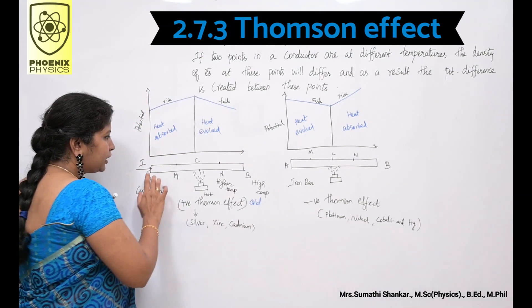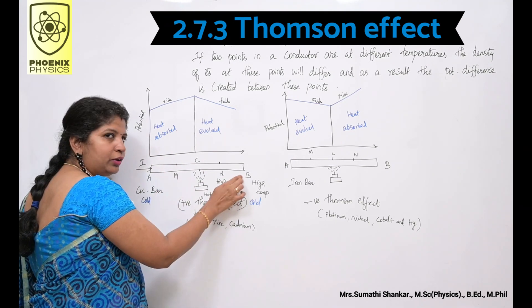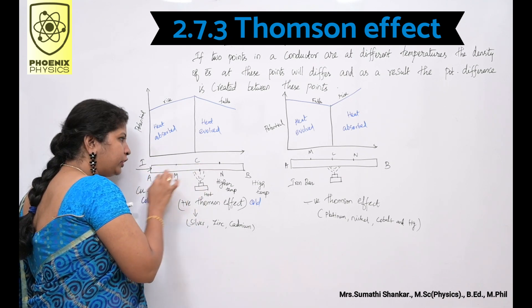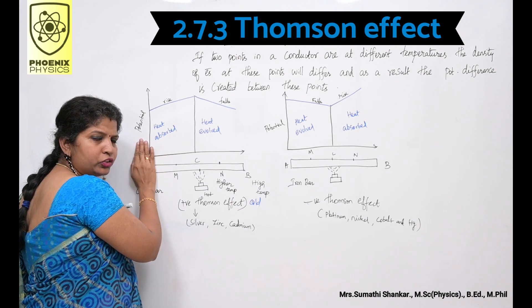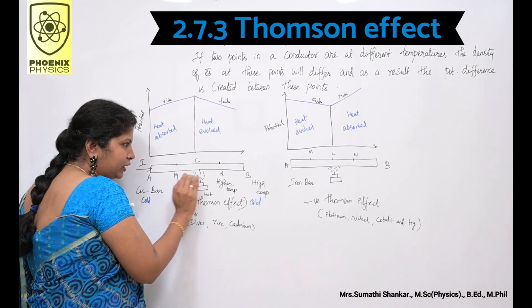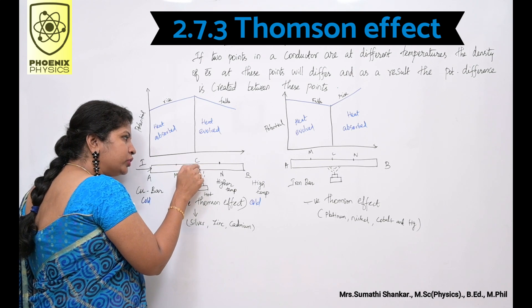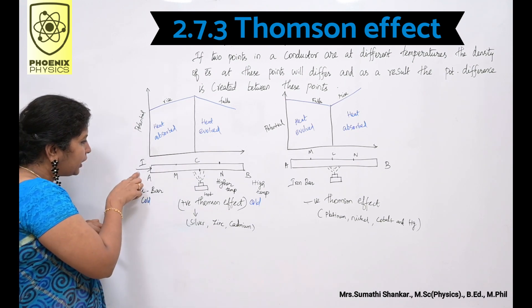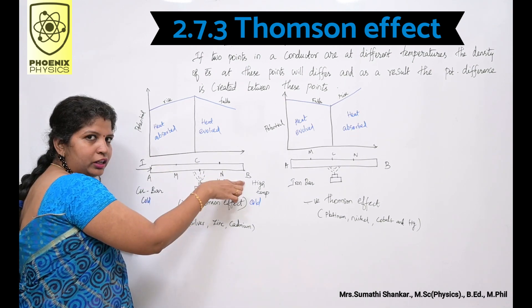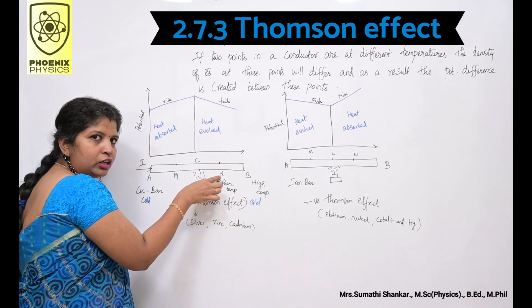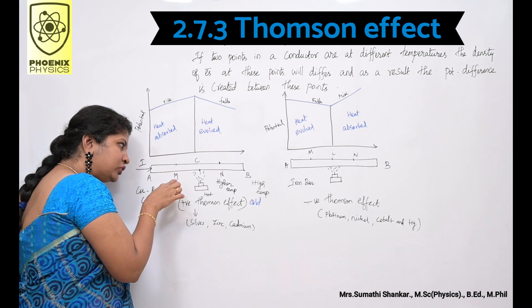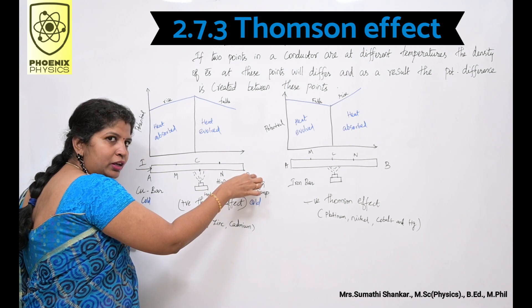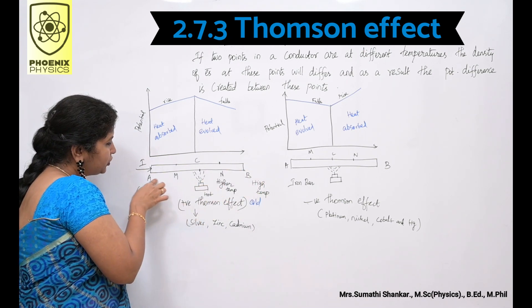Look at the diagram. Consider a copper bar AB heated in the middle point C and the current flows from A to B. When no current is flowing, the points M and N equidistant from C are at same temperature. When current is passed through AB, the point N shows higher temperature than M. Similarly, the point B will show higher temperature than A.